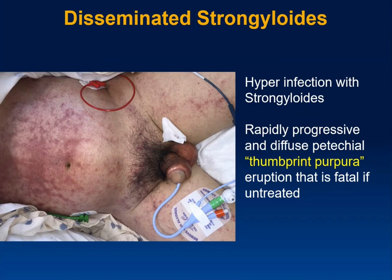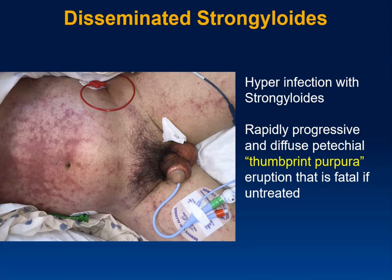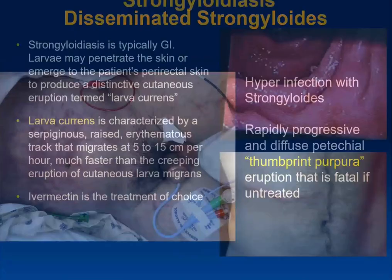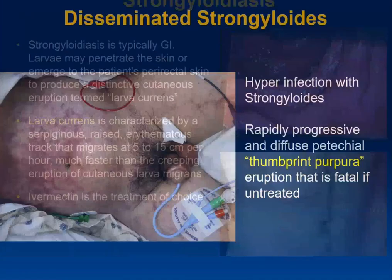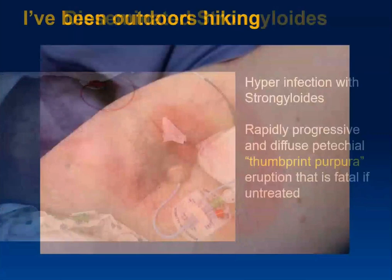The other manifestation is disseminated strongyloidiasis — hyperinfection. The key term you may see in boards is thumbprint purpura. Some of these lesions do look like a thumbprint. Remember: thumbprint purpura and larva currens with a fast-moving plaque are the board keywords for strongyloidiasis.